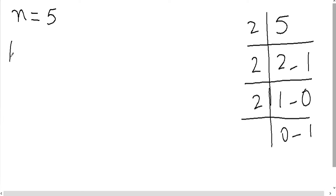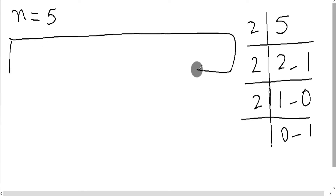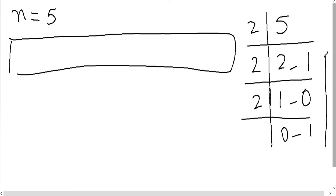Aap ne ek array leni hai. Array ke andar hum yeh remainders save kiraate jayenge. Hum pehle is order mein fill kiraate jayenge aur printing reverse order mein kar denge. Yeh jo remainders hain, aap ko pata hai yeh hamare paas aate kaise hain.